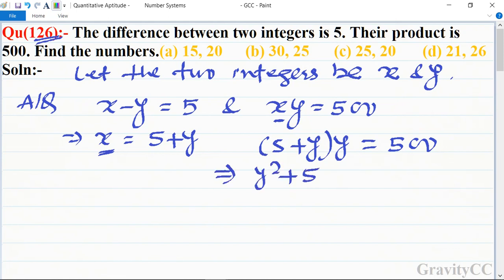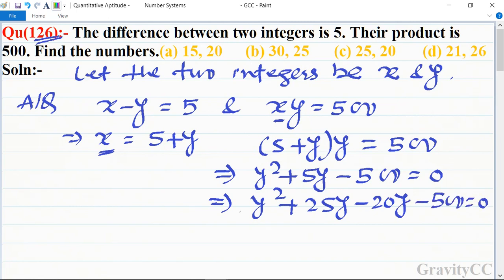plus 5y minus 500. Now splitting the middle term: y squared plus 25y minus 20y minus 500 equal to